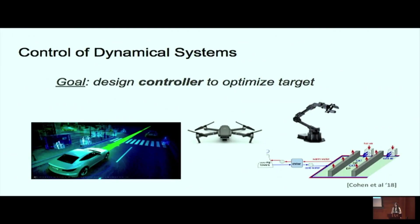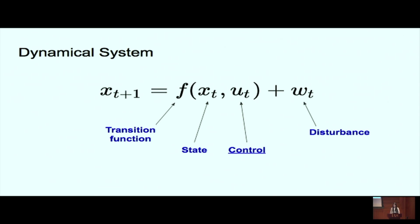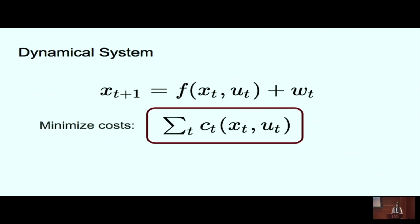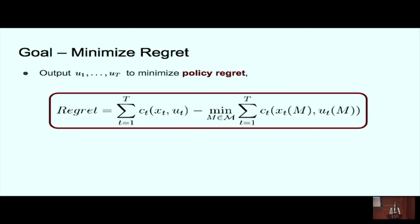Specifically, we have a dynamical system with F specifying some transition function. X_t is the state, U_t is the control. There is a disturbance W_t added to the system — it could be random or adversarial, we assume only that it's bounded by some constant. We want to minimize the sum of convex costs over the state and action. Specifically, we care about minimizing policy regret — competing with the best policy in hindsight from some policy class M.